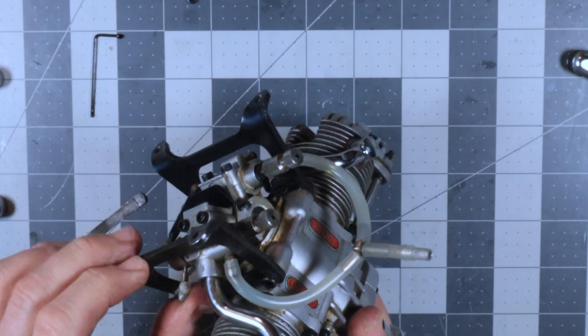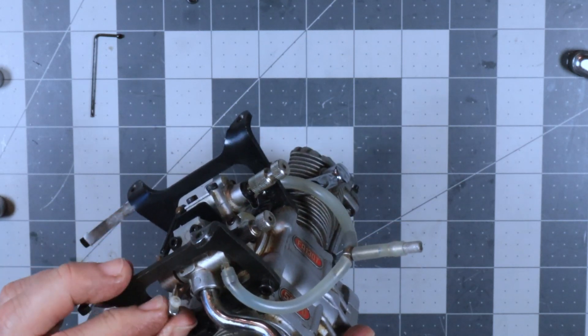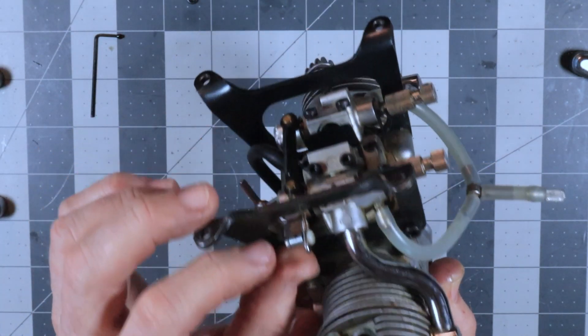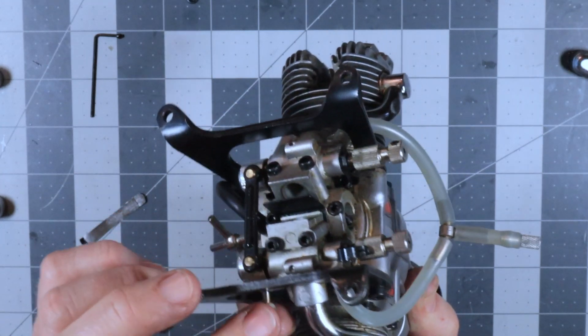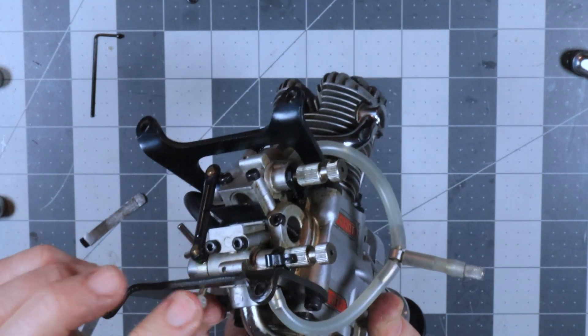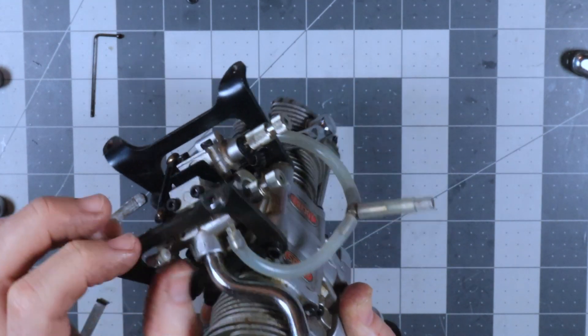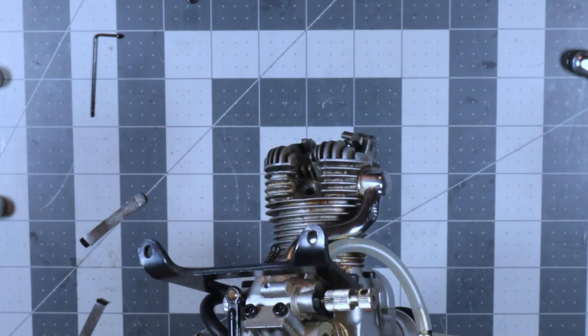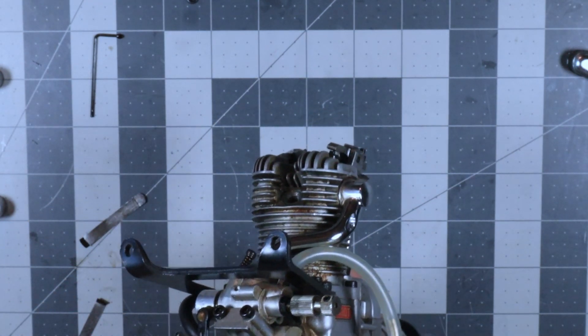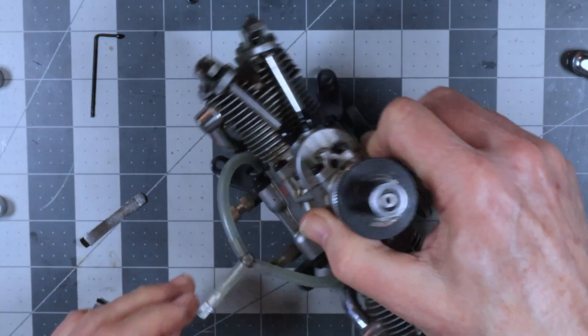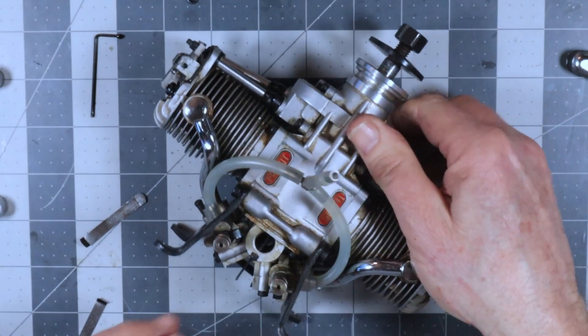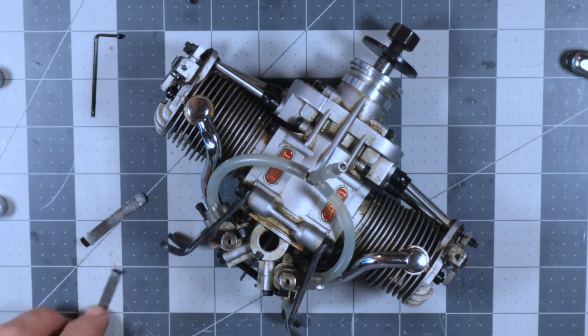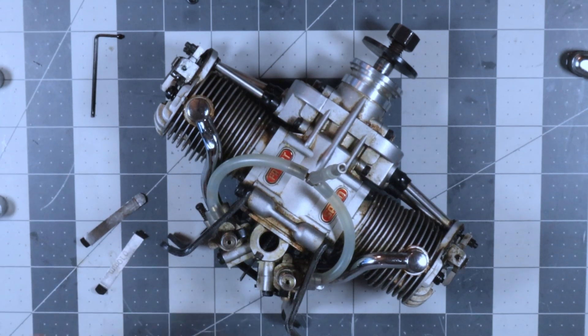The only other thing I need to do is I need to remove this little quick keeper. I don't like those things at all, although in this case I might use it. It depends on how the throttle hole on my upright lines up. But anyway, that's how I set the valves on a twin-cylinder engine or any single cylinder engine. So I hope you enjoyed watching.